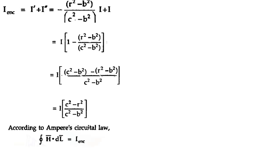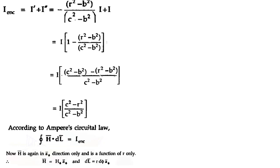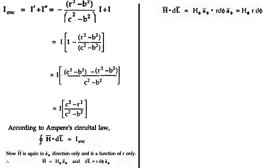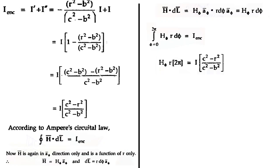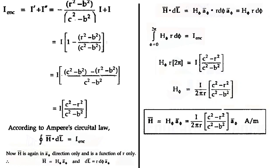Now applying Ampere's Circuital Law: H·dL = I. Substituting H vector = H_φ·A_φ and dL = R·dφ·A_φ gives H·dL = H_φ·R·dφ. Integrating dφ from 0 to 2π: H_φ·R·2π = I·(C² − R²)/(C² − B²). Therefore H_φ = 1/(2πR) × (C² − R²)/(C² − B²), and H = [1/(2πR)] × [(C² − R²)/(C² − B²)] · A_φ. This is the result for Region 3.